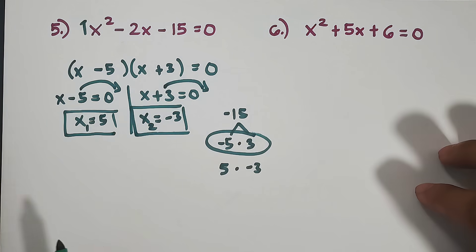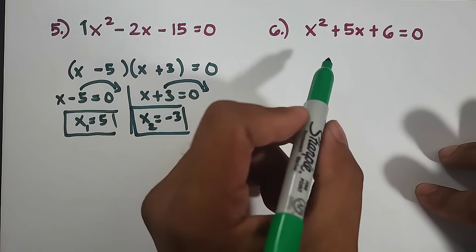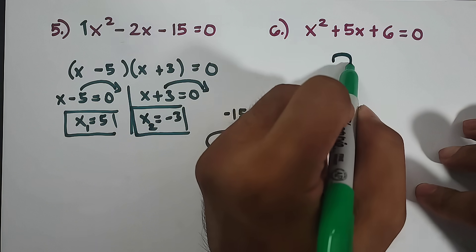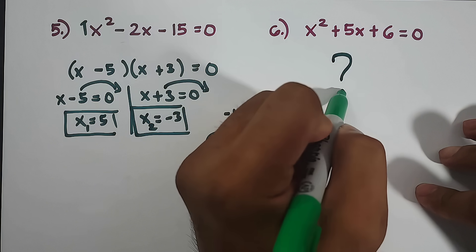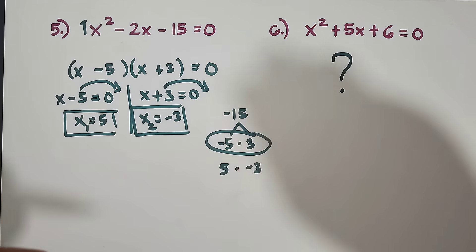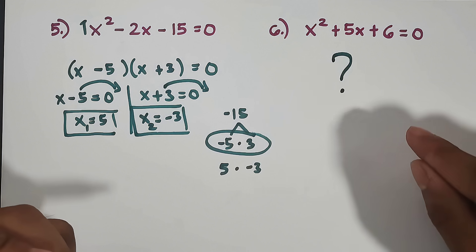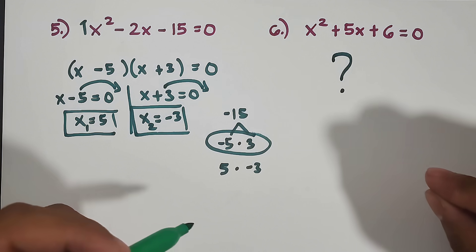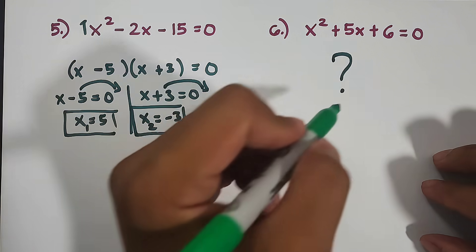For number 6, this will be your assignment. What are the solutions of x squared plus 5x plus 6 equals 0? Comment down below.